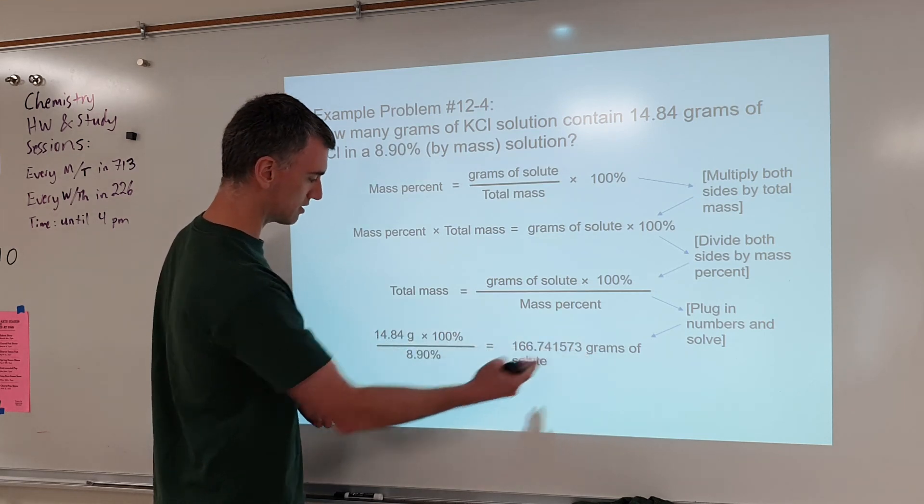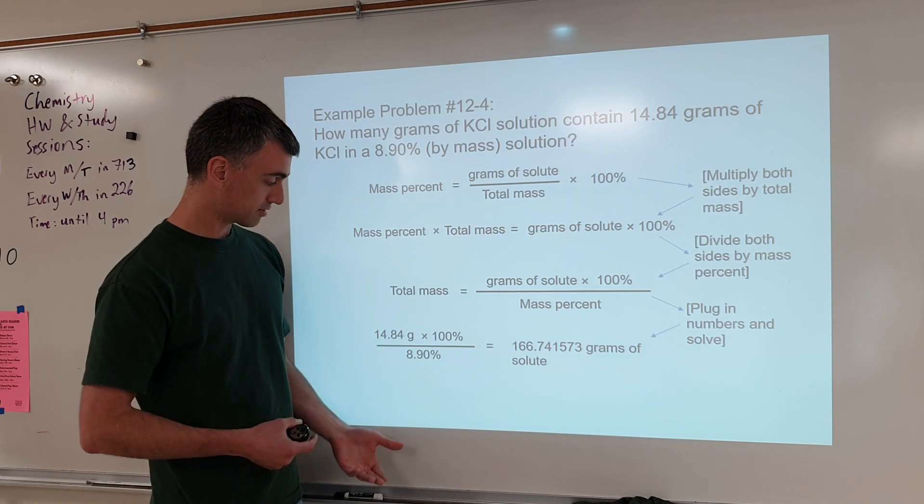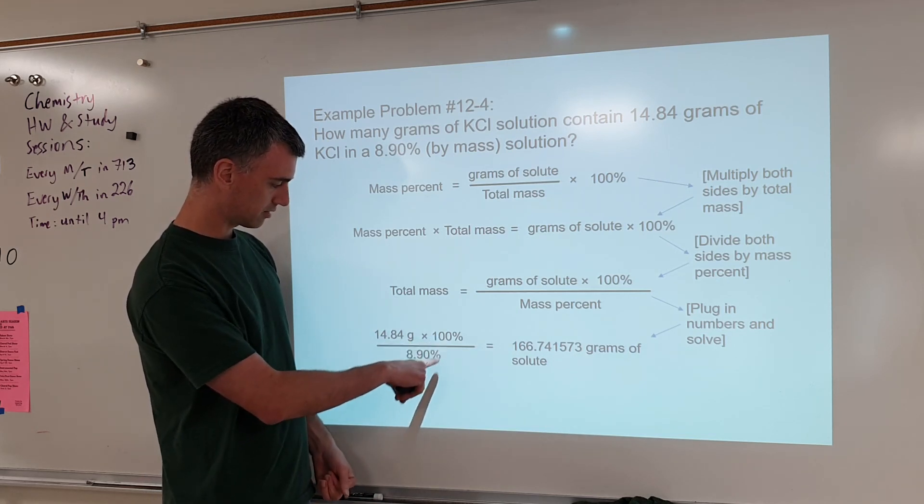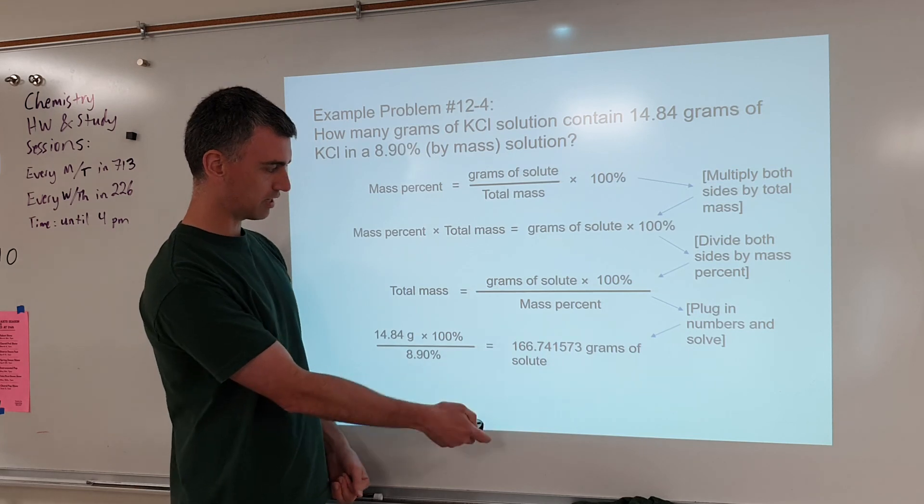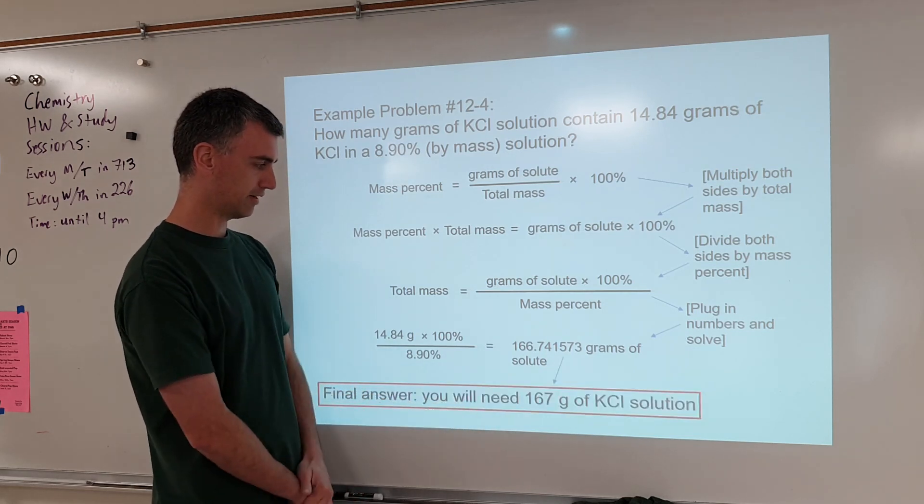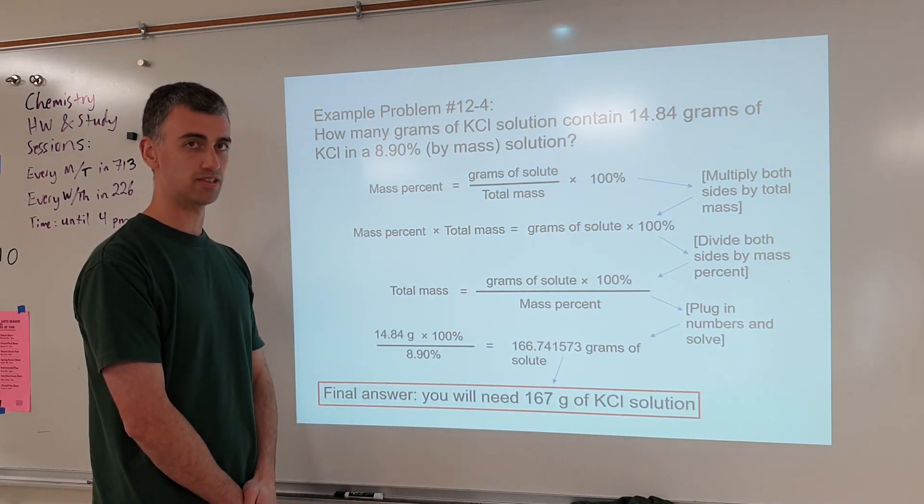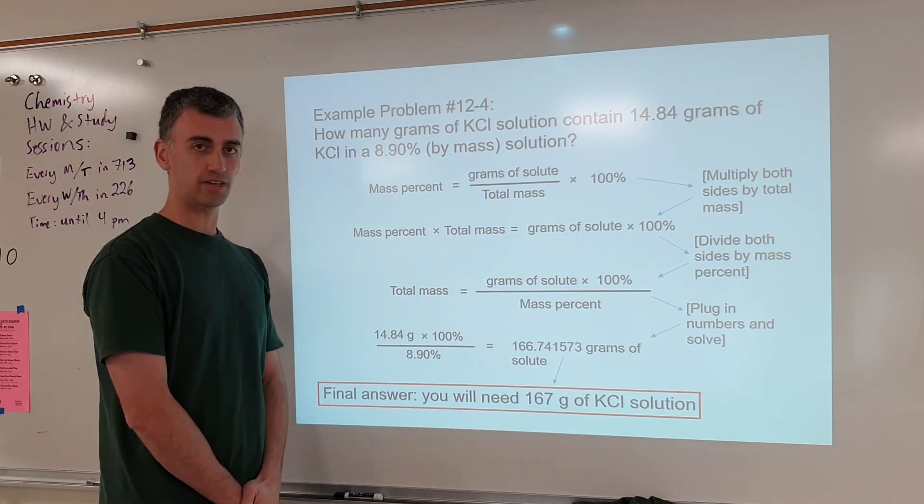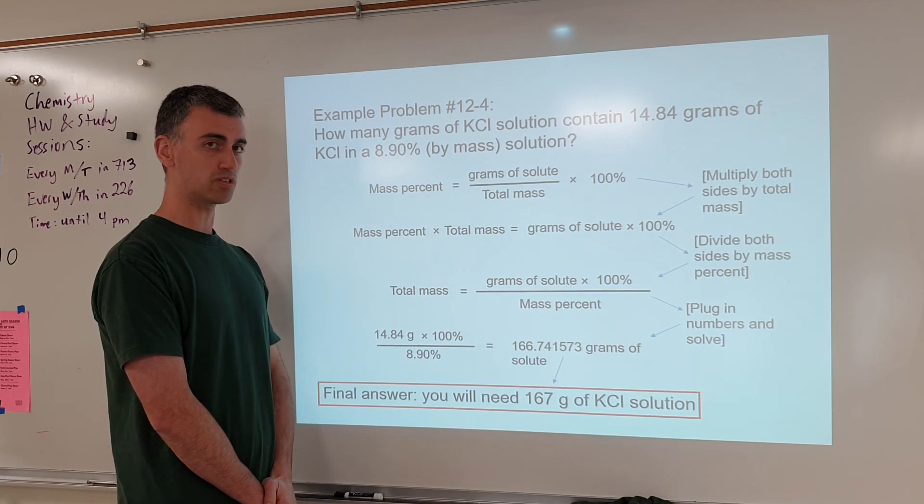So that's why we need to put grams here. And how many sig figs? Four, infinite, three. So we should have three sig figs in the final answer. That's why the answer looks like that. So that basically is a quick overview of all the different kinds of calculations that can be done with percent mass.